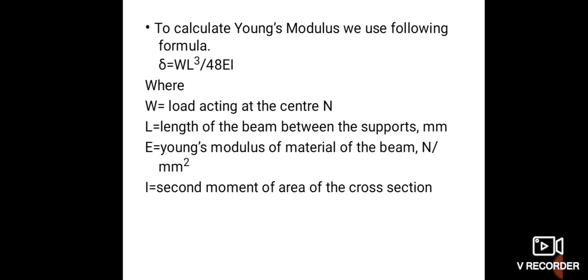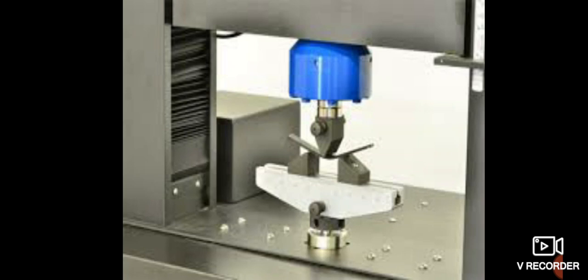The formula for Young's modulus is E = WL³ / 48EI. Here, W is the load acting at the center in Newtons; L is the length of the beam between the supports; E is Young's modulus in N/mm²; and I is the second moment of area of the cross-section. We can see the specimen resting on two supports with the load applied at the center, and as the specimen deforms and deflects, the dial gauge value is recorded.